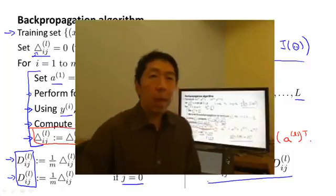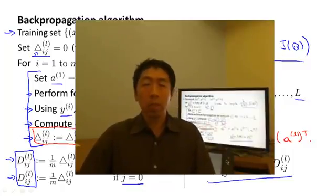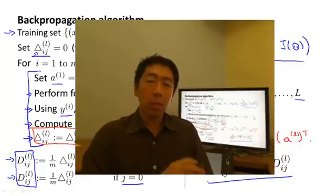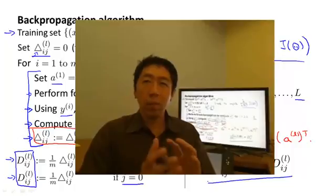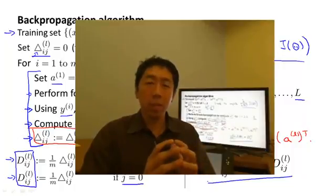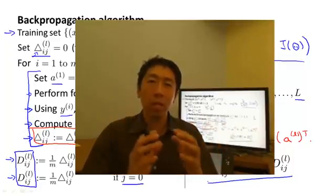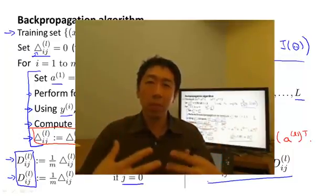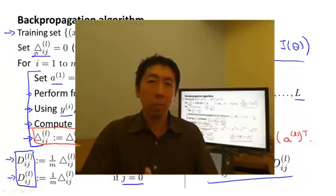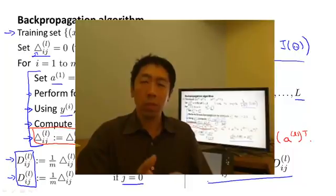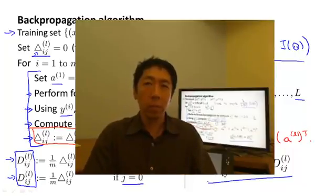So that's the backpropagation algorithm and how you compute derivatives of your cost function for a neural network. Both in the programming assignments and later in this video, we'll give you a summary so that you have all the pieces of the algorithm together and know exactly what you need to implement if you want to implement backpropagation to compute the derivatives of your neural network's cost function with respect to its parameters.